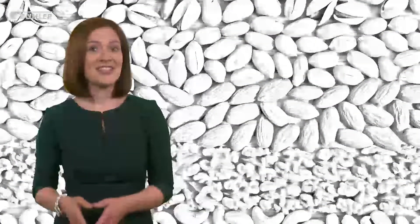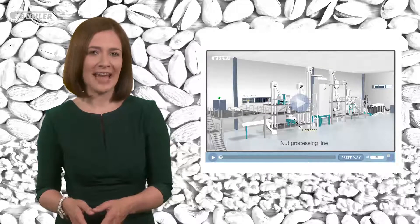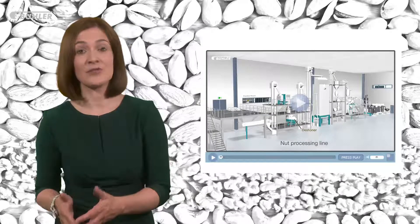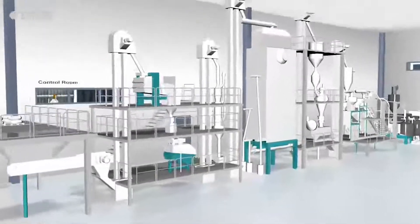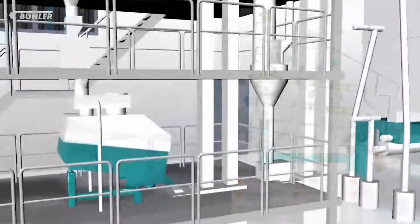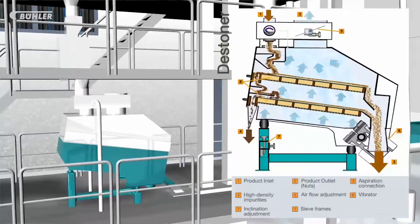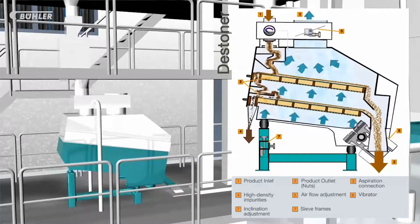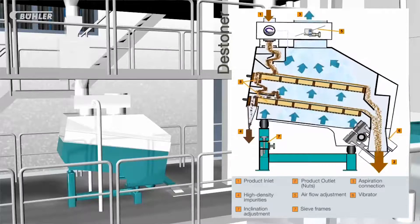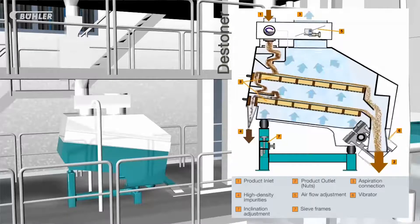Next is the destoner. A destoner uses density characteristics to remove foreign bodies from good nut product. As the animation demonstrates, the product stream is separated according to its specific gravity. This is done by the vibratory — the swinging back-and-forth motion of the screen — which transports product on the screens upstream against the product flow, and by the air flowing through the product from bottom to top. This means light particles collect at the top of the product layer and heavy particles such as stones move to the bottom of the screens where they're transported upstream towards the reject stream.